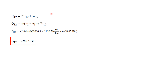Now we can calculate the heat transfer for both processes. For process one to two, the energy balance gives Q equals delta U plus W, ignoring kinetic and potential energy. Delta U is mass times the change in specific internal energy, so Q_12 equals mass times (U_2 minus U_1) plus W_12. With mass of two pounds mass, the values of U_2 and U_1, and W_12 of negative 38.65 BTUs, the heat transfer for process one to two is negative 298.5 BTUs.